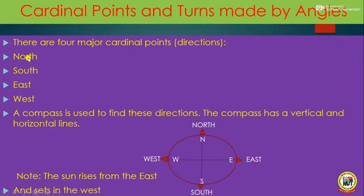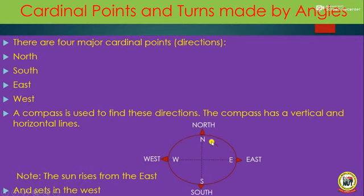The four major cardinal points again are North, South, East, and West. A compass is used to find these directions. The compass has both vertical and horizontal lines. On the compass, the vertical line at the top is labeled as North. Directly opposite it we have South. To the right we have East, and to the left we have West. So these are the four major cardinal points or four major directions.